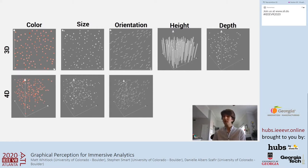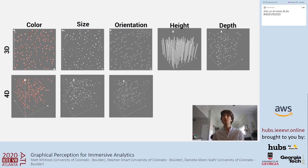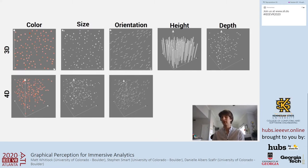These are the visualization types used in our study. To avoid confusion, when I discuss 3D visualizations, those are the X, Y, and third dimension, whereas 4D visualizations use X, Y, Z, and a fourth dimension.